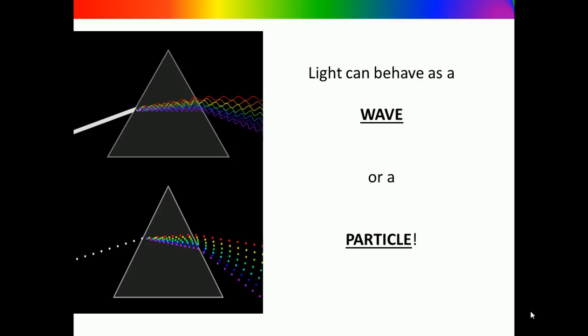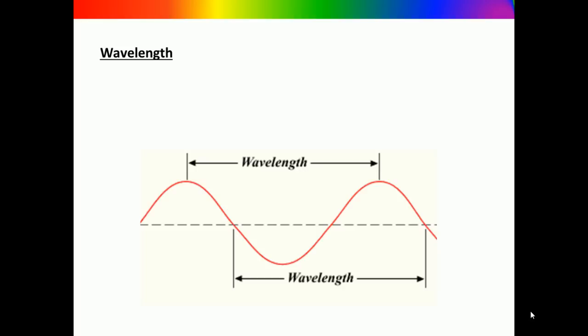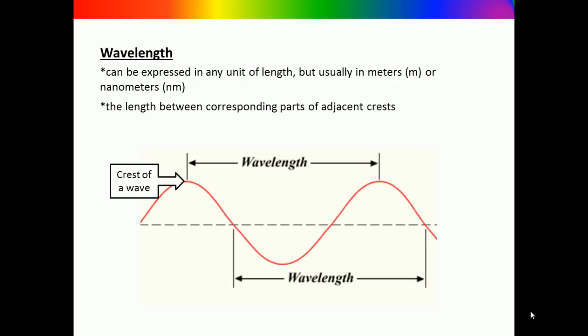In this class we will mainly focus on light behaving as a wave. Light is composed of many waves of different wavelengths ranging from large wavelengths kilometers long to very small wavelengths that are only picometers in length. When describing the length of a wave, we usually use the units meters or nanometers. One wavelength is defined as the length between two adjacent crests, but you can use any two corresponding adjacent points as shown in the diagram.